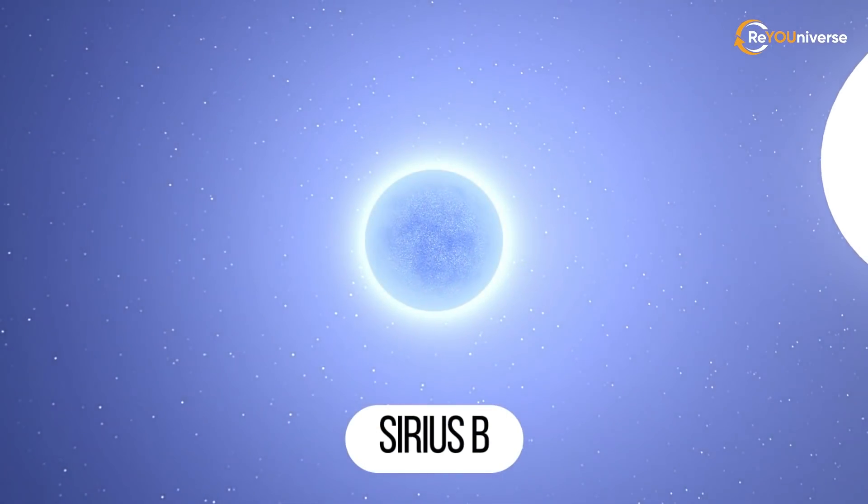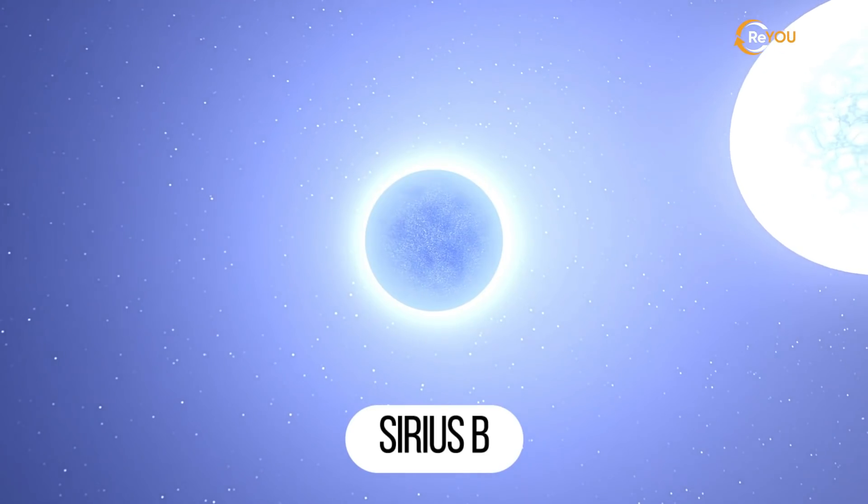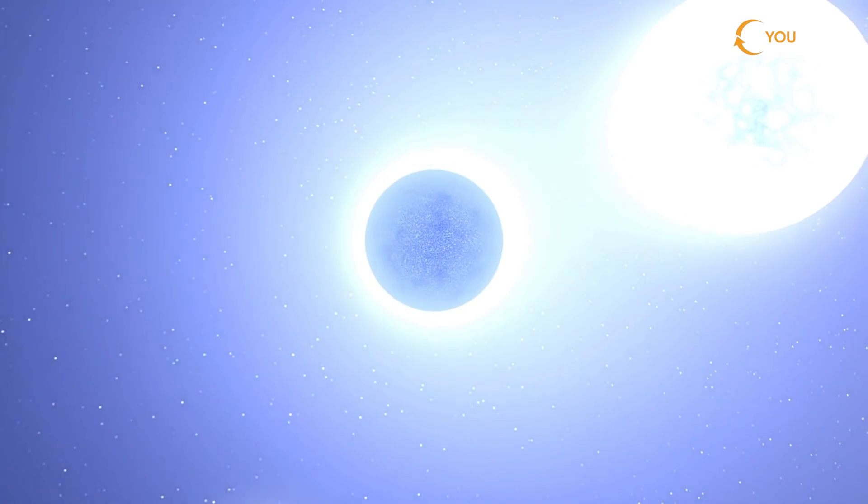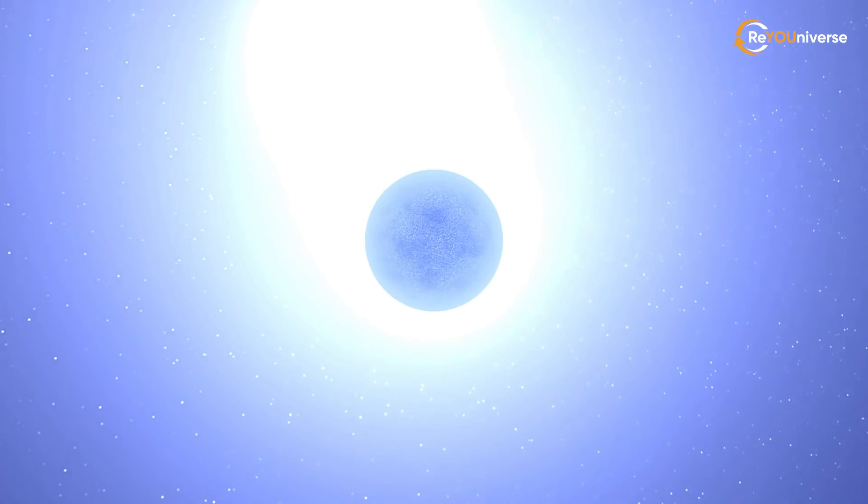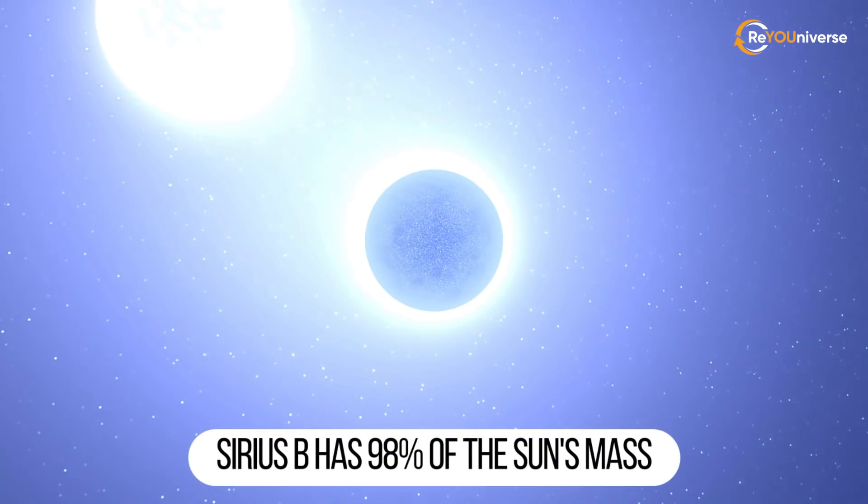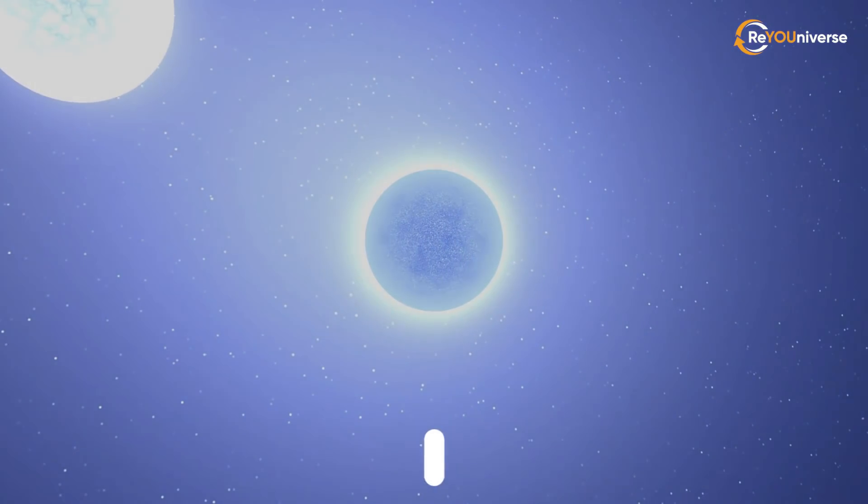Sirius B is a faint satellite of Sirius A, and is the closest white dwarf to the solar system. It is the size of the Earth. Being the closest to us, it is one of the most studied white dwarfs in the world. It played an important role in the discovery of white dwarfs. The fact that it's overshadowed by the highly luminous Sirius A makes it more difficult to observe. Sirius B has 98% of the sun's mass, but only 2.7% of its luminosity.